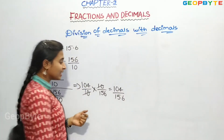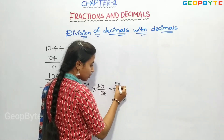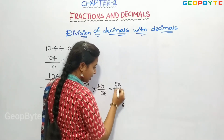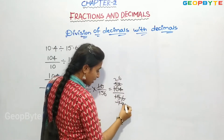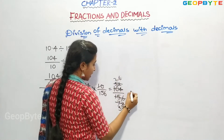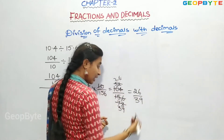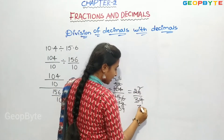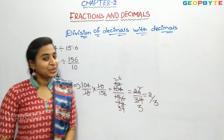Now we can further solve this. Two 5s are 10, two 2s are 4, two 7s are 14, two 8s are 16, two 6s are 12, two 3s are 6, two 9s are 18. We get 26 by 39. We can further solve this: 13 2s are 26, 13 3s are 39. We got 2 by 3.